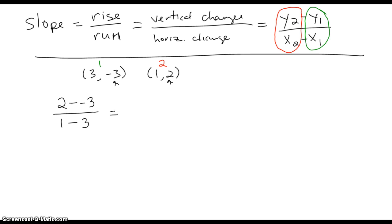2 minus a negative equals a plus, so we've got 2 plus 3 over 1 minus 3. 2 plus 3 is 5, 1 minus 3 is a negative 2, so this equals a slope of negative 5 halves.